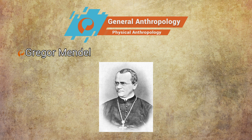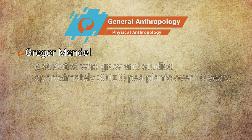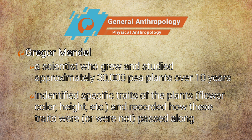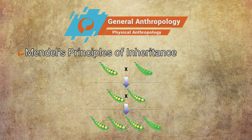Unbeknownst to Darwin, in 1866, a monk named Gregor Mendel published some of the information crucial to answering these questions. Mendel was a scientist who used the monastery garden to grow and study approximately 30,000 pea plants over 10 years. He identified specific traits of the plants — flower color, height, etc. — and recorded how these traits were or were not passed along from one generation to the next. Based on this data, Mendel eventually identified specific patterns that are now referred to as Mendel's Principles of Inheritance.